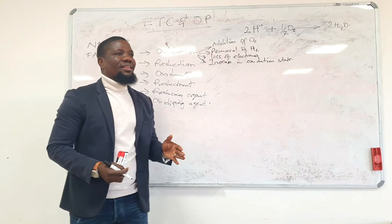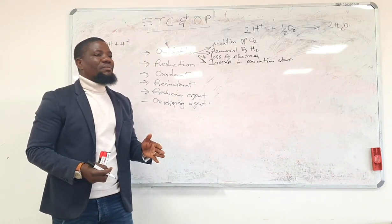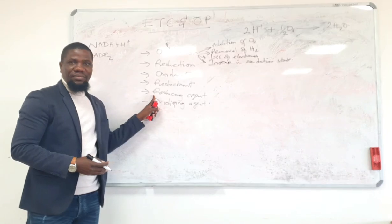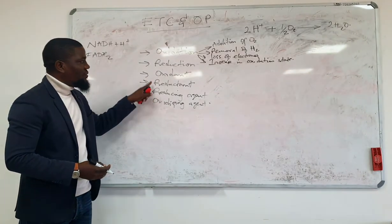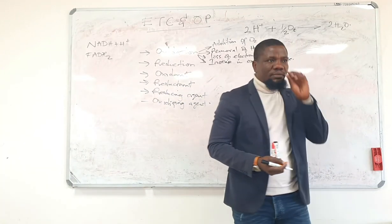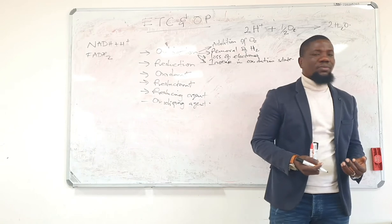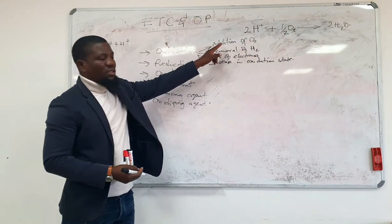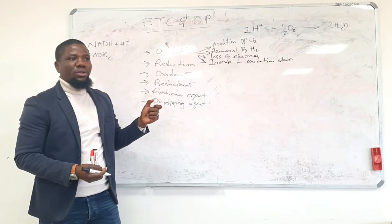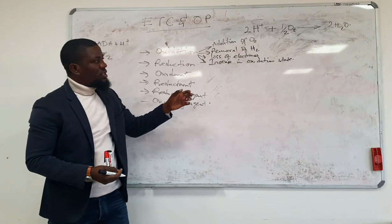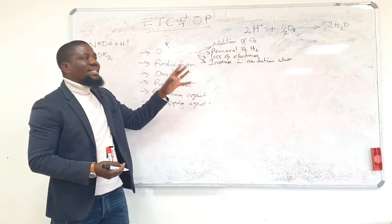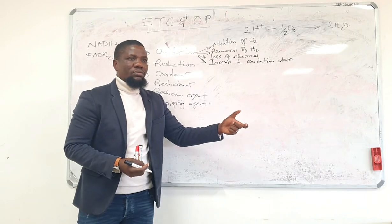An oxidant is a substance that oxidizes another substance — it is an oxidizing agent. So the oxidant leads to removal of hydrogen, a loss of electrons, an increase in oxidation state, and the addition of oxygen. And the oxidant at the end of the day will itself become reduced.